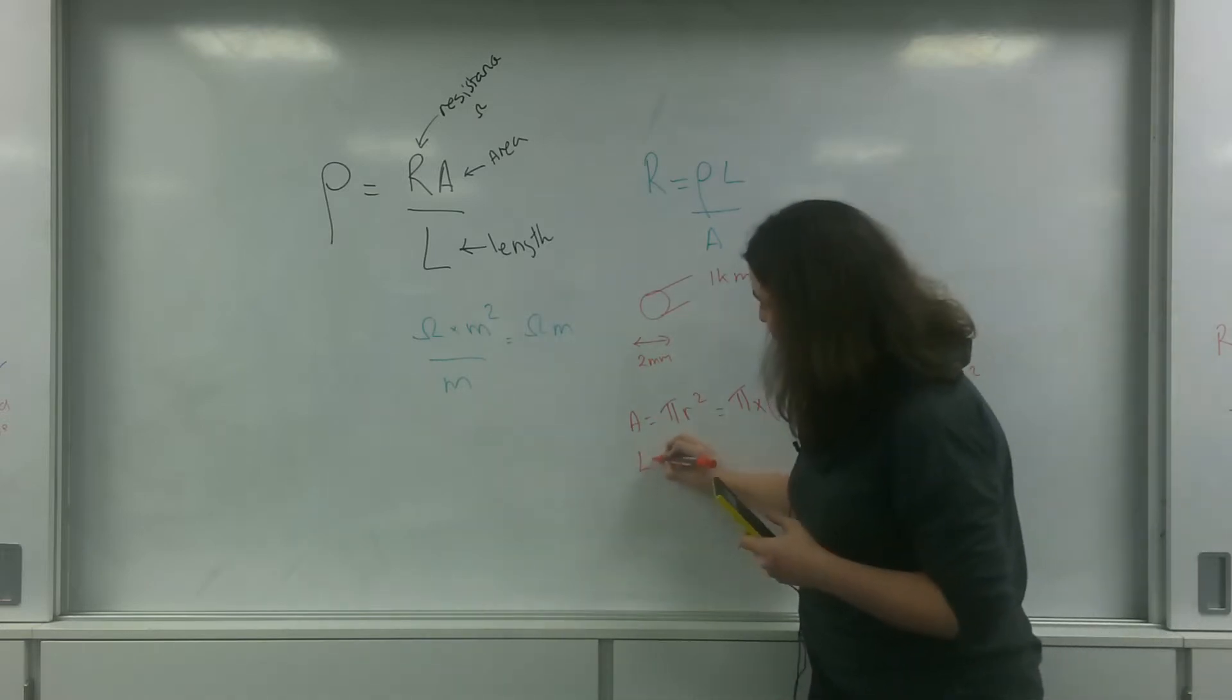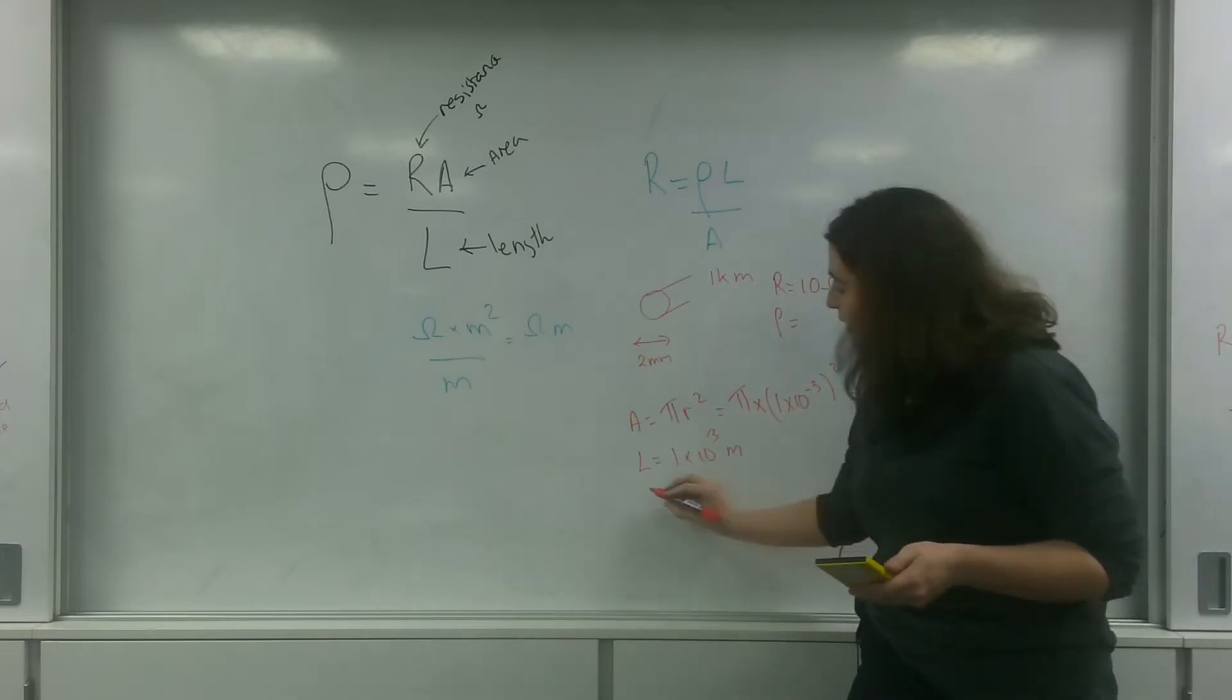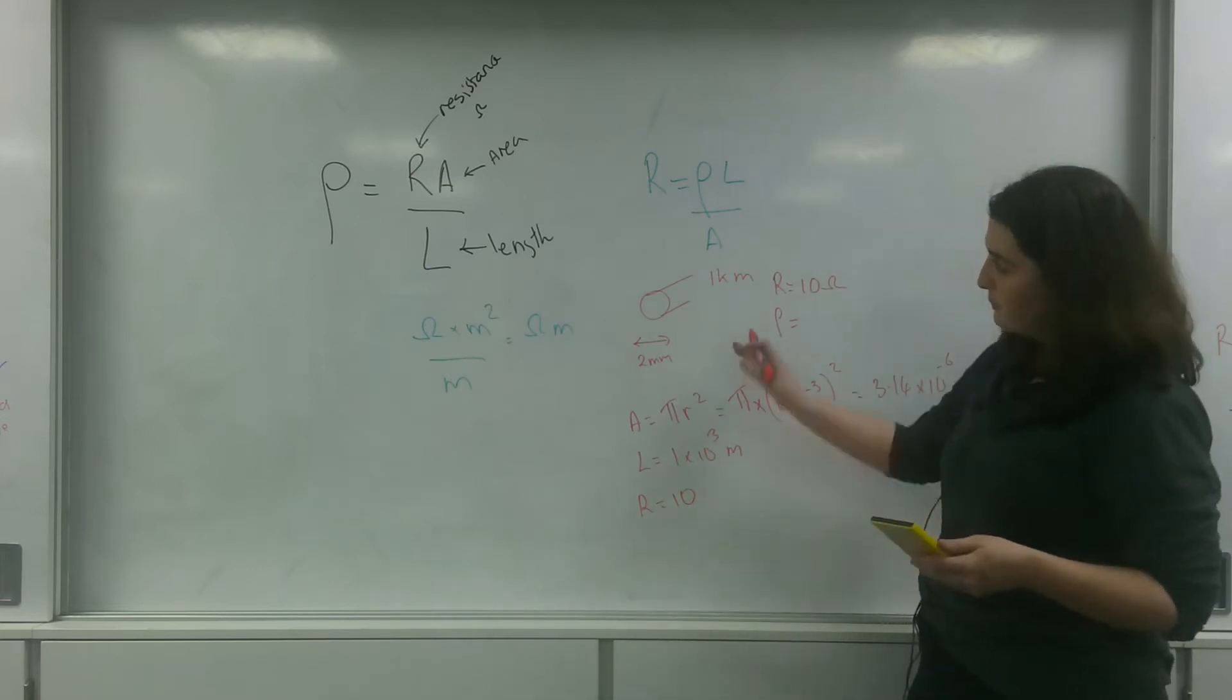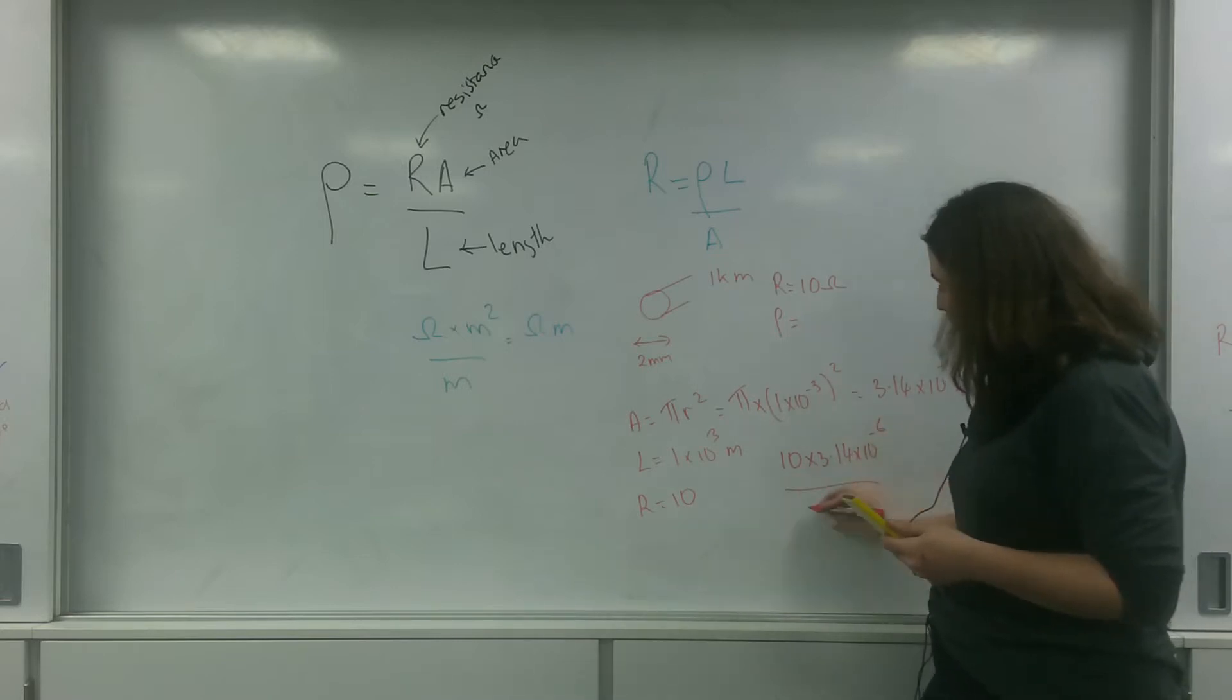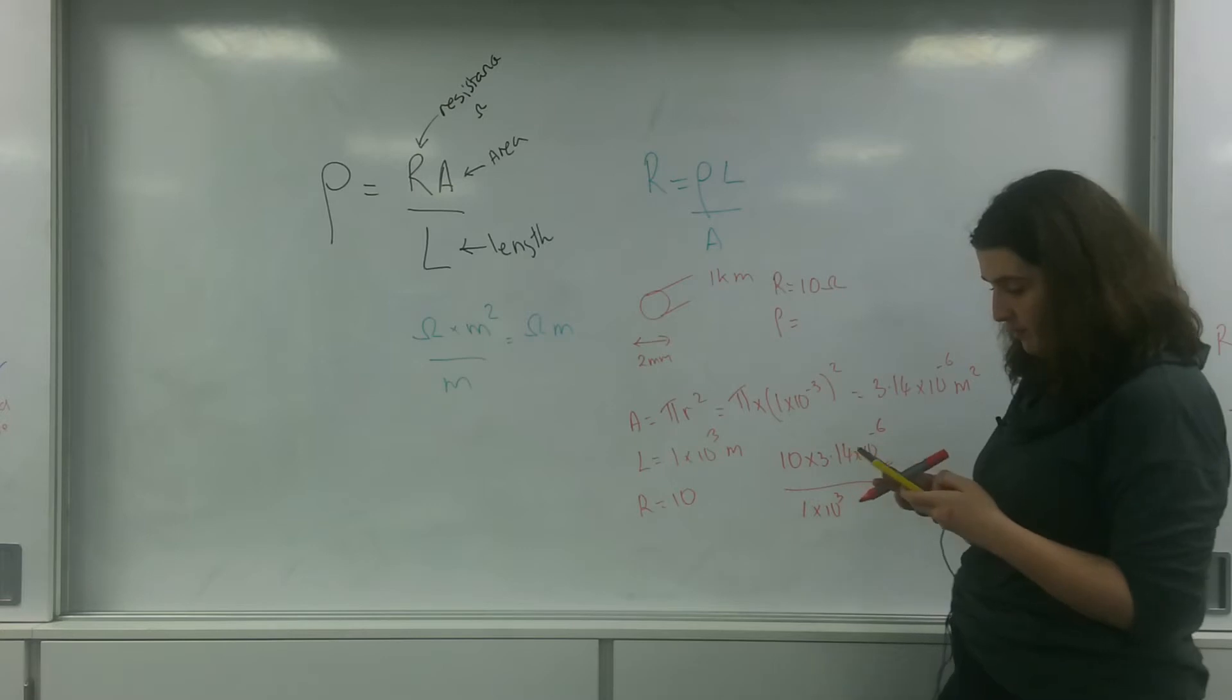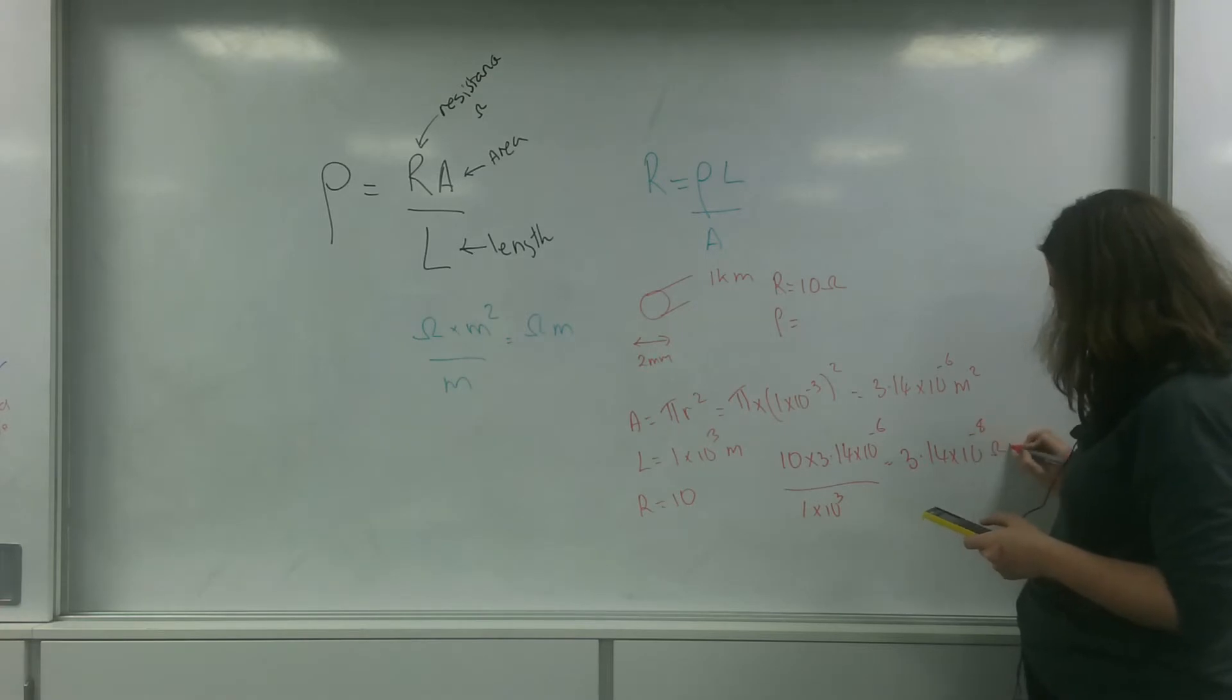My length, of course, is 1 times 10 to the 3 meters. And my resistance is 10. So let's put it into the formula. Here, 10 times 3.14 times 10 to the minus 6, all over 1 times 10 to the 3. And I get a value of 3.14 times 10 to the minus 8 ohm-meters.